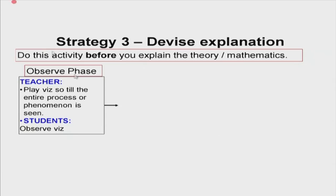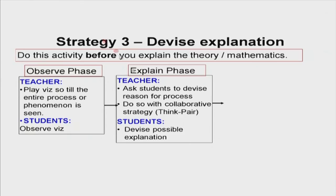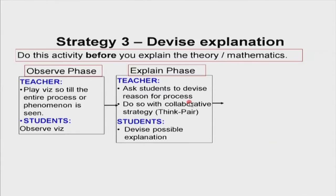In the observe phase, play the entire visualization so students see what is happening — it is a completely new phenomenon they have never encountered. Then there is an activity: the teacher asks students to devise an explanation or reason for why the process happened. Students can come up with multiple reasons, and in fact that is what we want — devise your own explanation for why this happened.